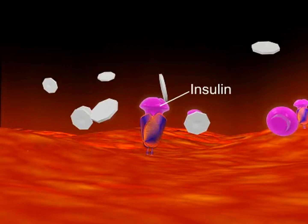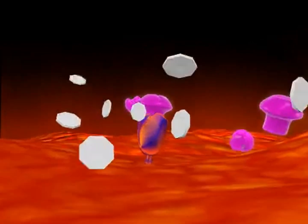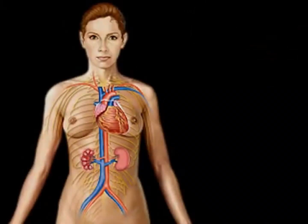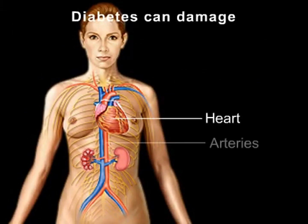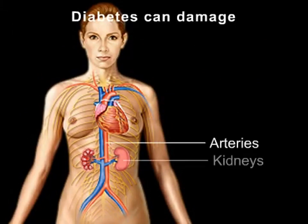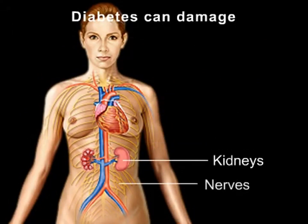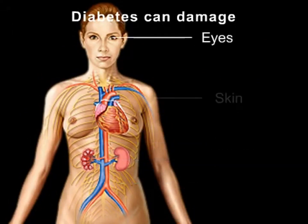AGEs create an inflammatory condition in the vasculature which causes heart disease and damage to other organs such as the kidneys. Diabetes can eventually cause damage to the heart, arteries, kidneys, nerves, eyes, and skin.